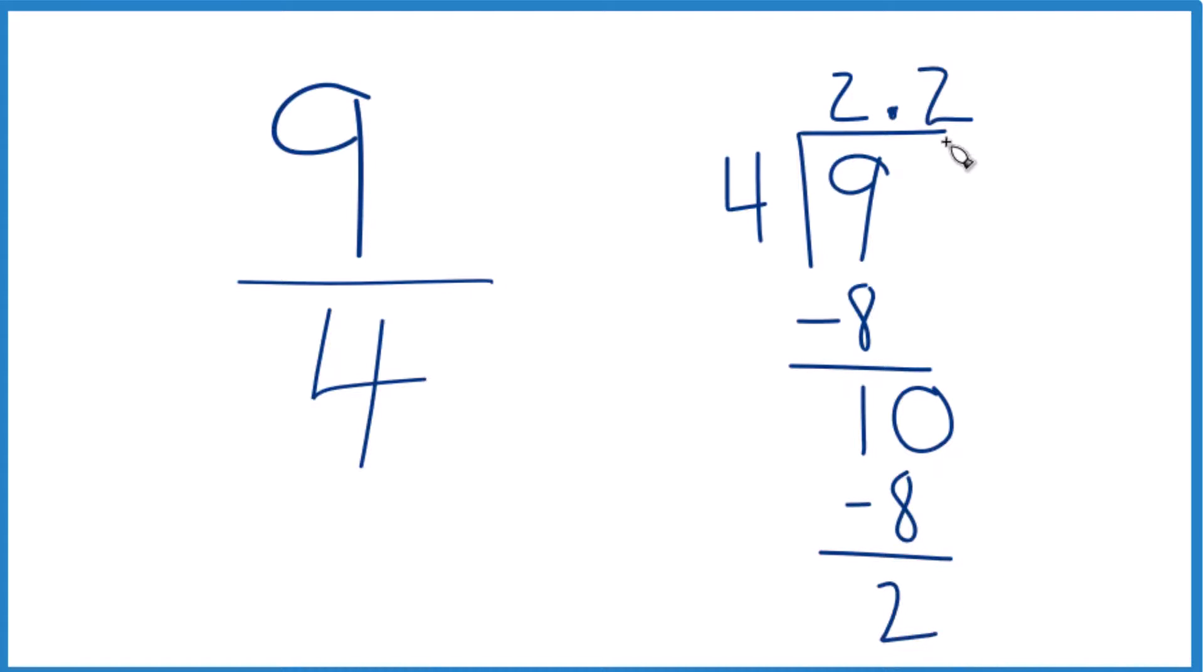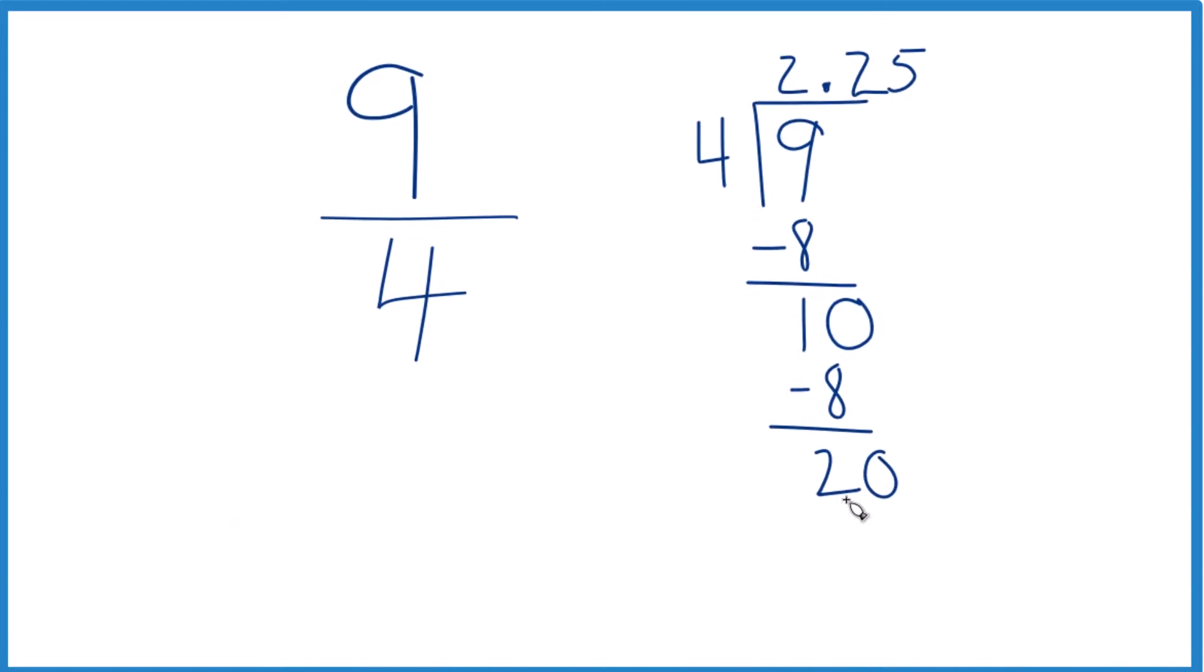So we'll move over one place, call this twenty. Now five times four equals twenty. Subtract, no remainder.